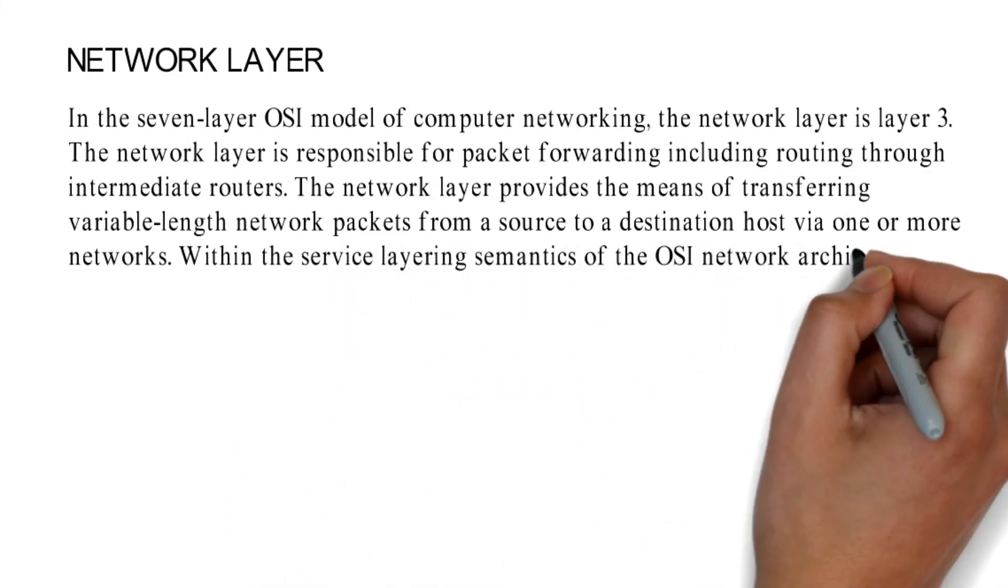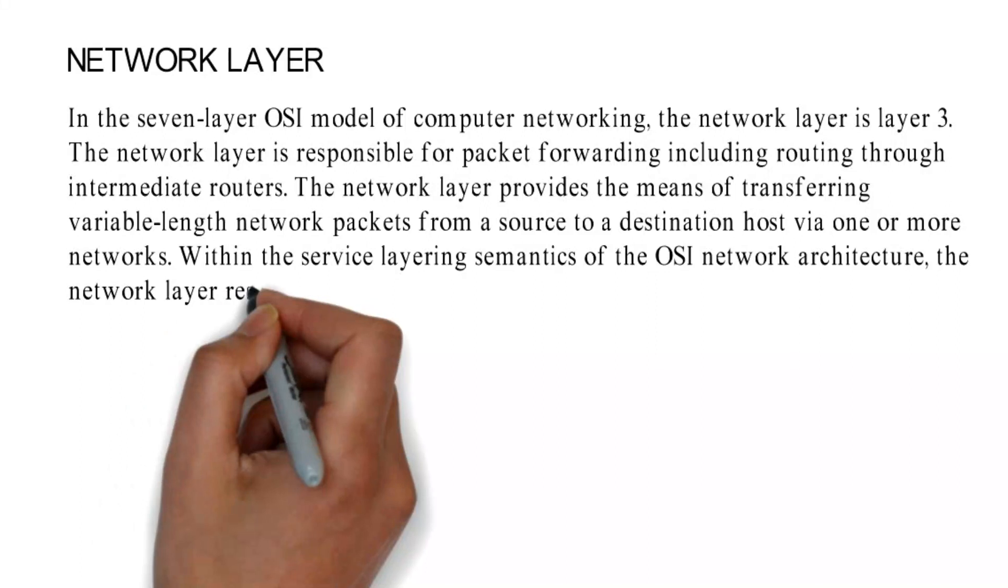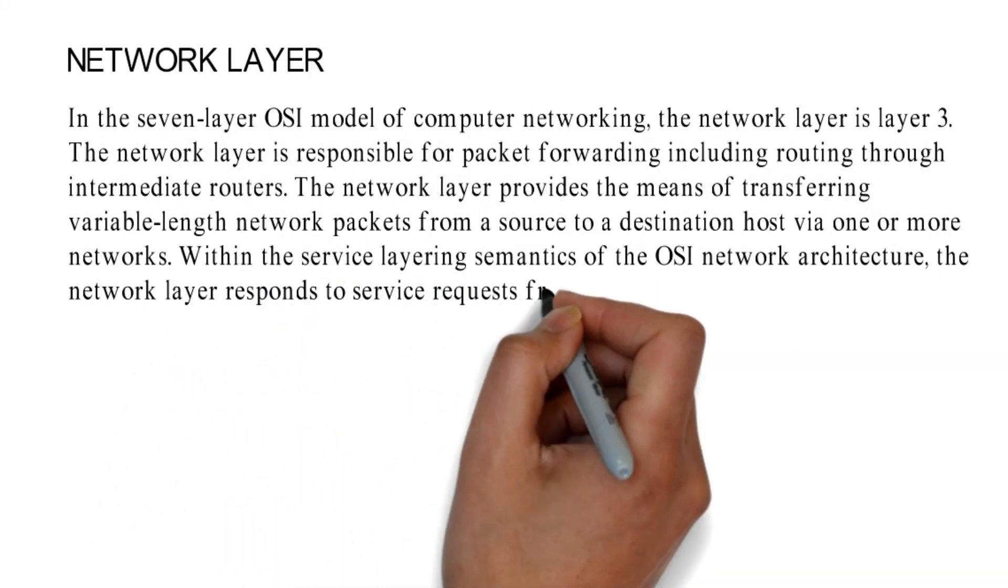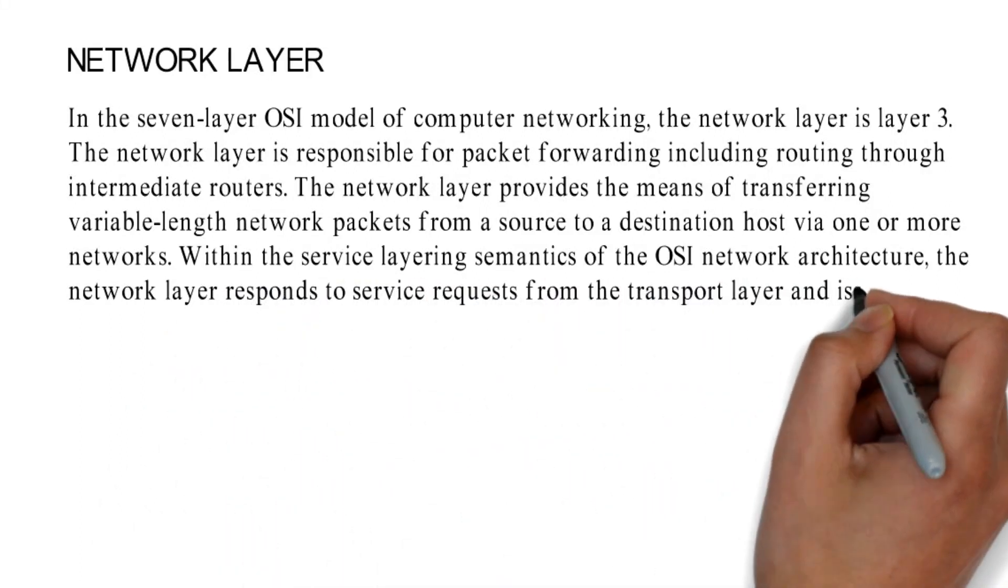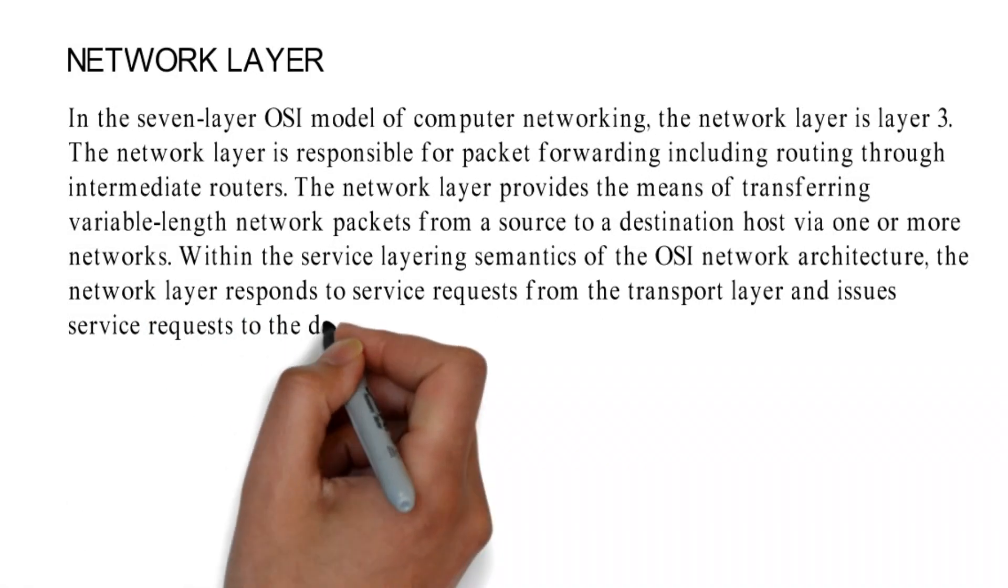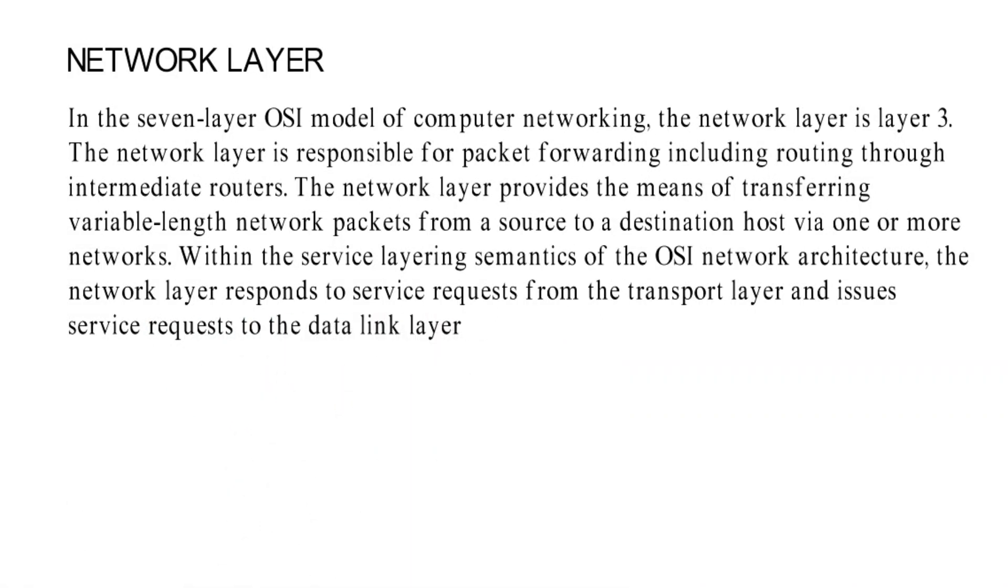Within the service layering semantics of the OSI network architecture, the network layer responds to service requests from the transport layer and issues service requests to the data link layer.